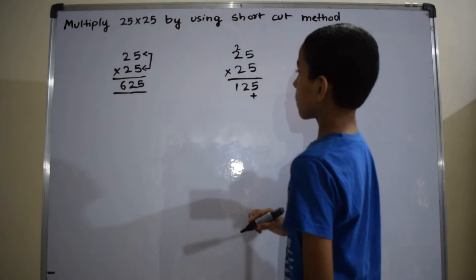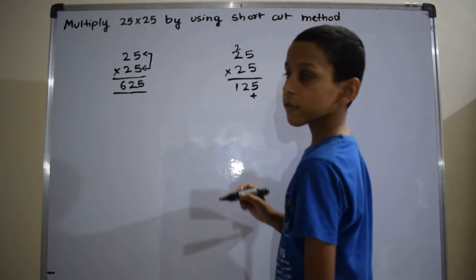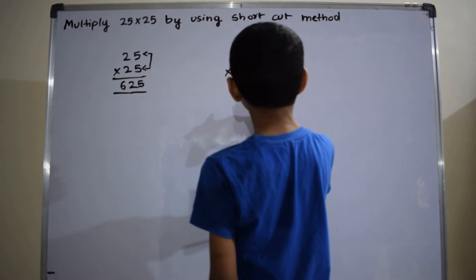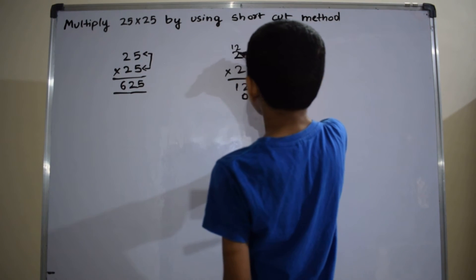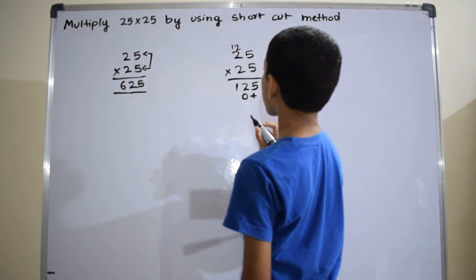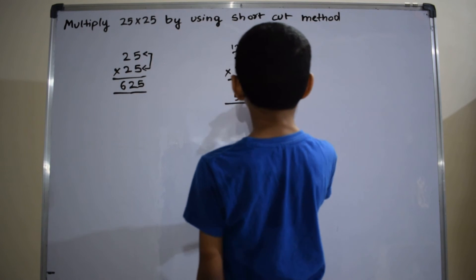Now multiplying 10th place digit. So now we have to multiply 25 with 2. 2 into 5 equals to 10. Write here 0, 1 is carried. 2 into 2 equals to 4. 4 plus 1 equals to 5.